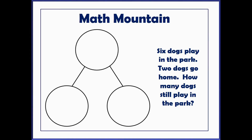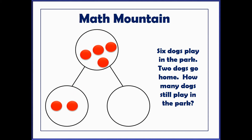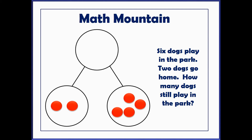Another great tool for solving missing add-in problems is the math mountain. Here, the whole amount goes in the top circle, and then as the whole is broken into parts, they are placed in the bottom circles. If we know one part, we move the one part that we know down, and then it's easy to find the missing part. As we model using break-apart sticks and math mountains, be sure to use the language of part-part-whole. This helps students when generating equations, so that they know the whole amount is on one side of the equal sign, while the parts are on the other side.